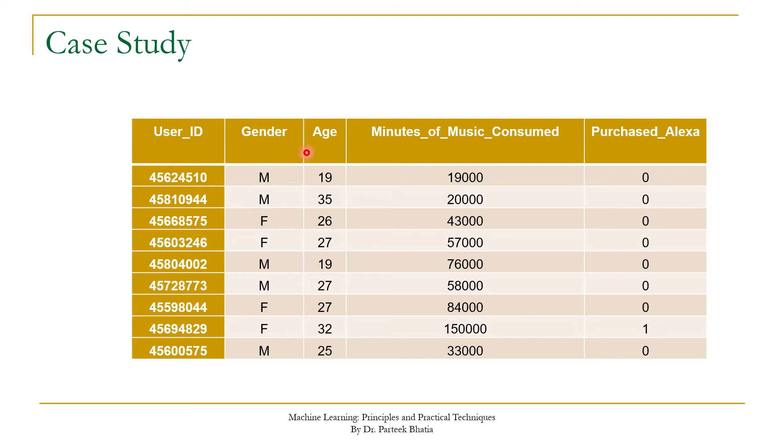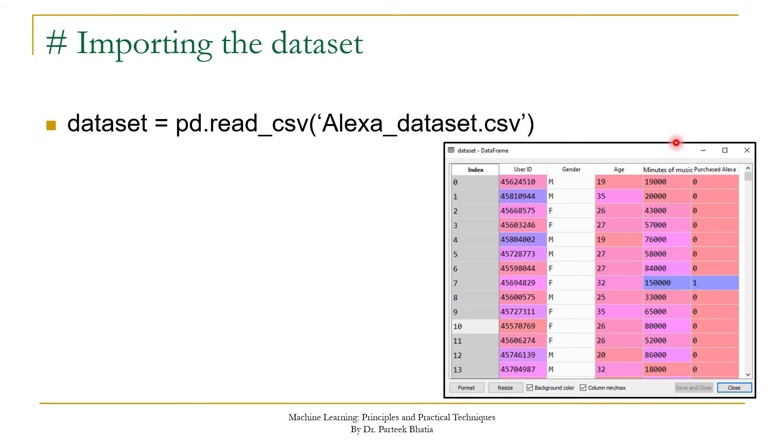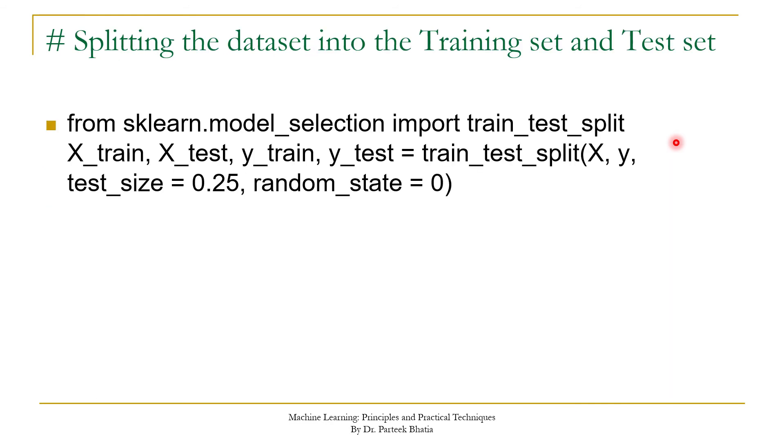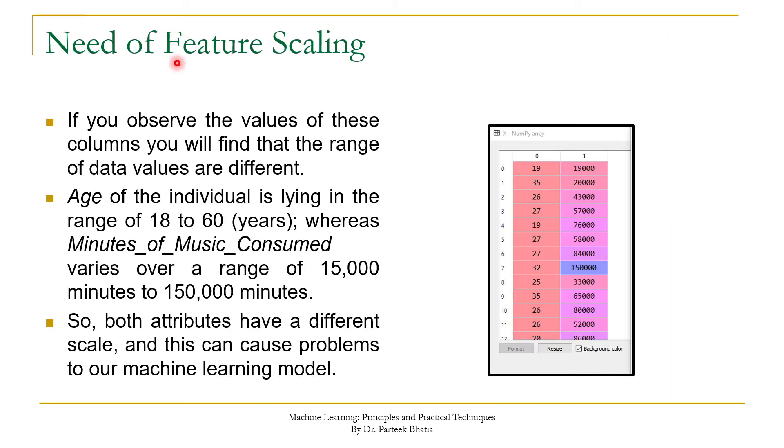We consider attributes like user ID, gender, age, and minutes of music consumed. We are only considering age and minutes of music as input attributes, while purchased is the output attribute. In last session we loaded the dataset, created our X and Y, and performed train-test split.